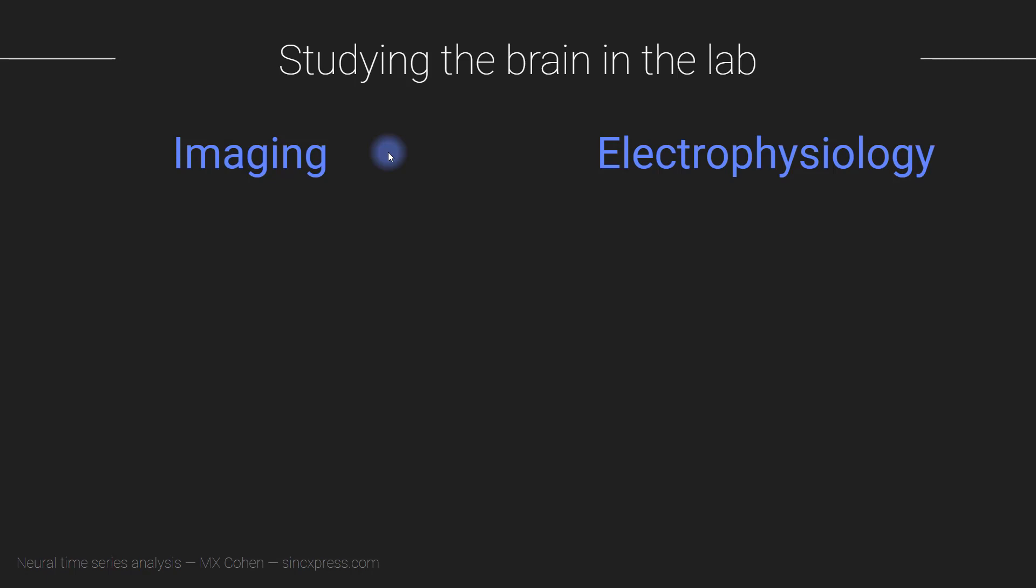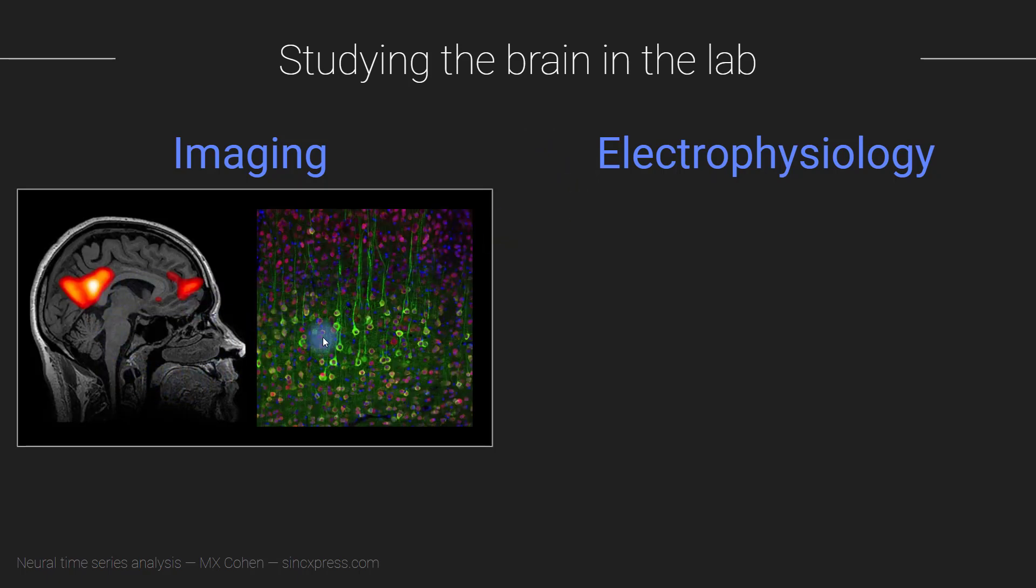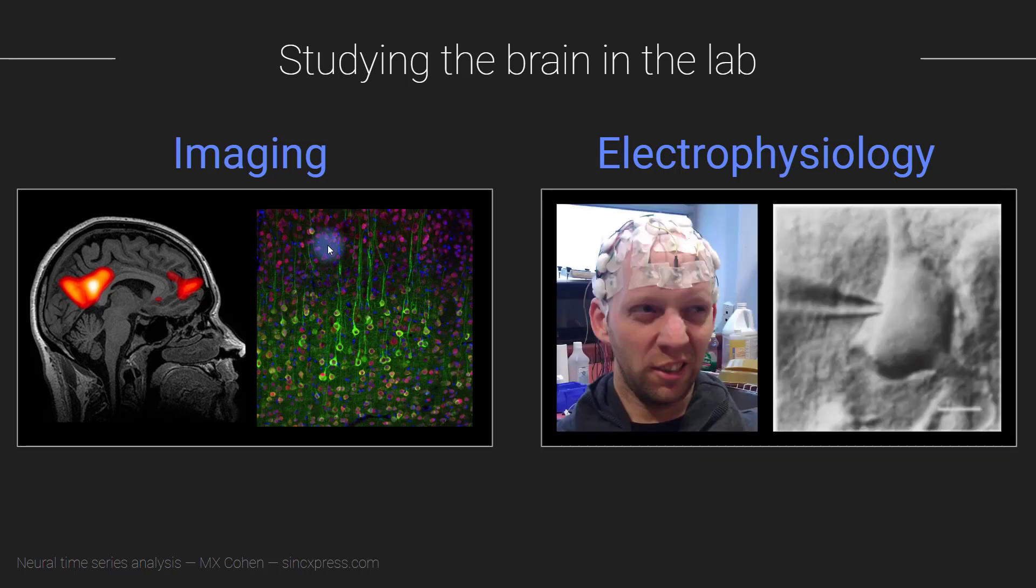Broadly speaking, there are two different families of methods for studying the brain. One I refer to as imaging and the other I refer to as electrophysiology. Now these two are kind of overlapping, they're actually not so easy to distinguish from each other but broadly speaking imaging involves taking pictures of the brain. You might get pictures at a kind of macroscopic scale like with fMRI or at a microscopic scale like this where each of these little circles with a little tail on it is a cell is a brain cell. So imaging gives you like snapshots of the brain and electrophysiology of course is what we're focusing on in this course that's about recording the electric the electrical activity of the brain.